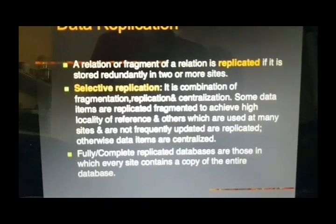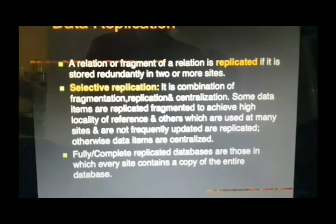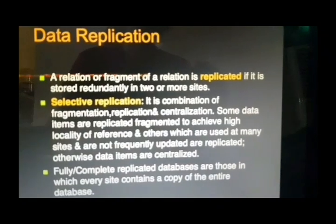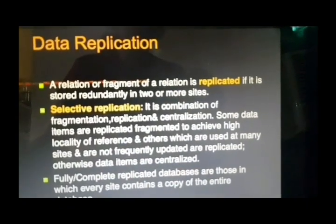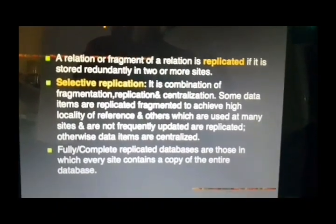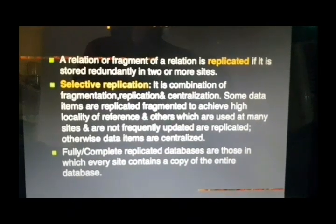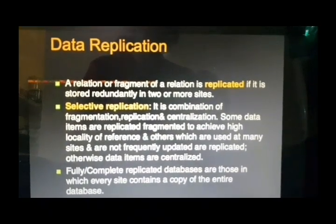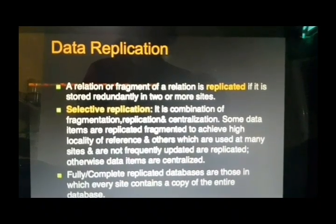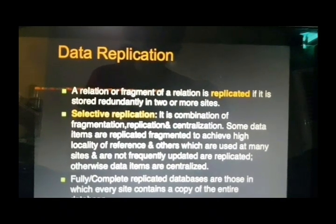Data replication: a relation or fragment of a relation is replicated if it is stored redundantly in two or more sites. A relation means a table, or its part. Fragmentation may be vertical or horizontal. Vertical fragmentation means column-wise fragmentation, and horizontal fragmentation means fragmentation done based on rows.